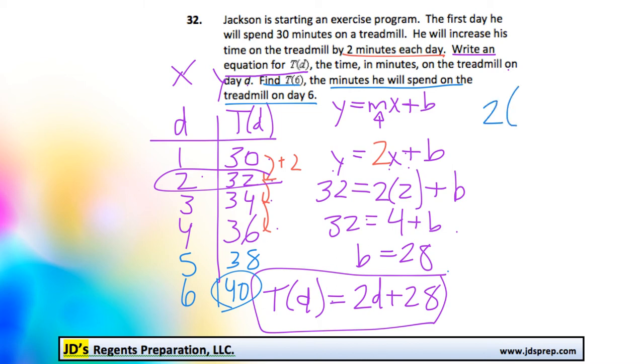But we could also use the equation here. All we would do is do 2 times the day number, which is a 6, and add 28. And you'll see if we do that, we get the same answer because 12 plus 28 is also 40. So it would be 40 minutes total.